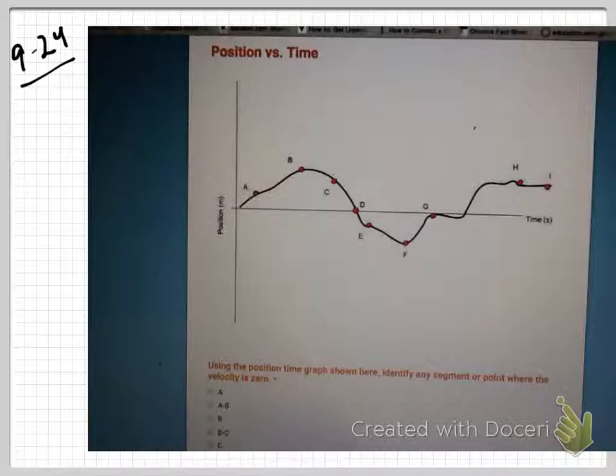Is there a segment for which the velocity is zero? How many of you would say that velocity is zero between A and B? B and C? C and D? D and E? E and F? F and G? G and H? H and I? Yes.